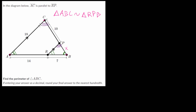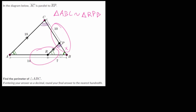We can set up an equation relating the ratios of the corresponding sides. If we look at side AC and compare it to RP, that gives us a proportionality constant when we take the big side and divide it by the smaller side. That ratio will be the same when we compare any corresponding sides, such as AB divided by RB. Since we have information for the bottom sides AB and RB, and we're trying to find PB, we can set up ratios involving these corresponding sides.